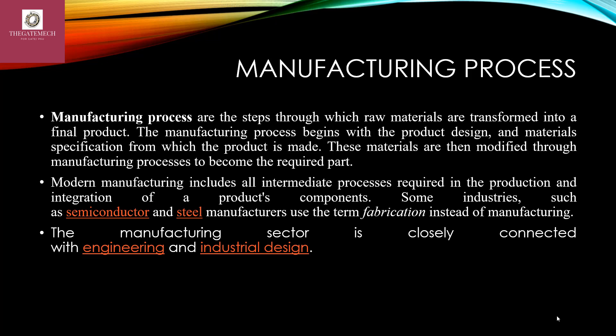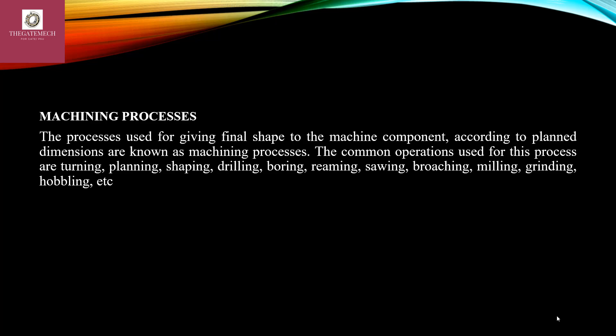Some industries like the semiconductor industry and steel manufacturing plants use the term fabrication instead of manufacturing process. The manufacturing sector is closely connected with engineering and industrial design. Moving on to machining processes — the machining process is used for giving the final shape to a machine component according to the planned dimension or design.